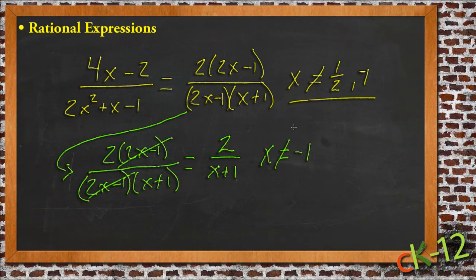x just can't be negative 1 here. It doesn't say anything about, and it doesn't show anything about, the 1 half. But since this is expected to be a simplified version of our original expression, those two things should be equal. They should be equivalent, and anything that doesn't work in the first one shouldn't work in the second one.